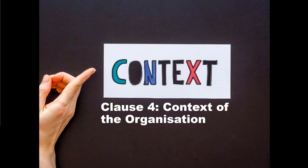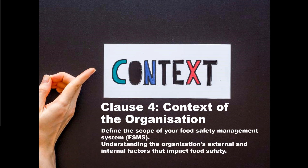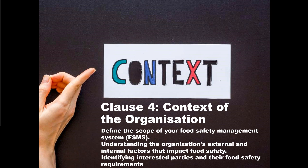Clause 4 is the context of the organization — here you look at the scope of your food safety management system. If you're a dairy, for example, does that include receiving milk, owning the delivery trucks, operating a packaging line? Where does your food safety management system stop — when you load the milk onto trucks, or when it's placed on the supermarket shelf? You have to understand your organization, what type of food safety management system you need, and who the stakeholders involved are.